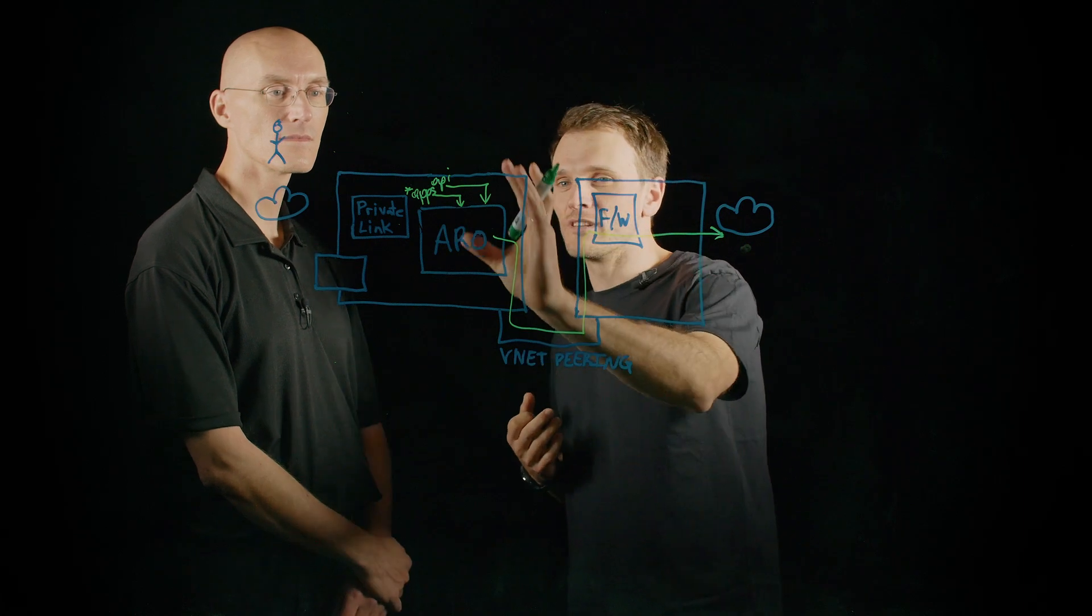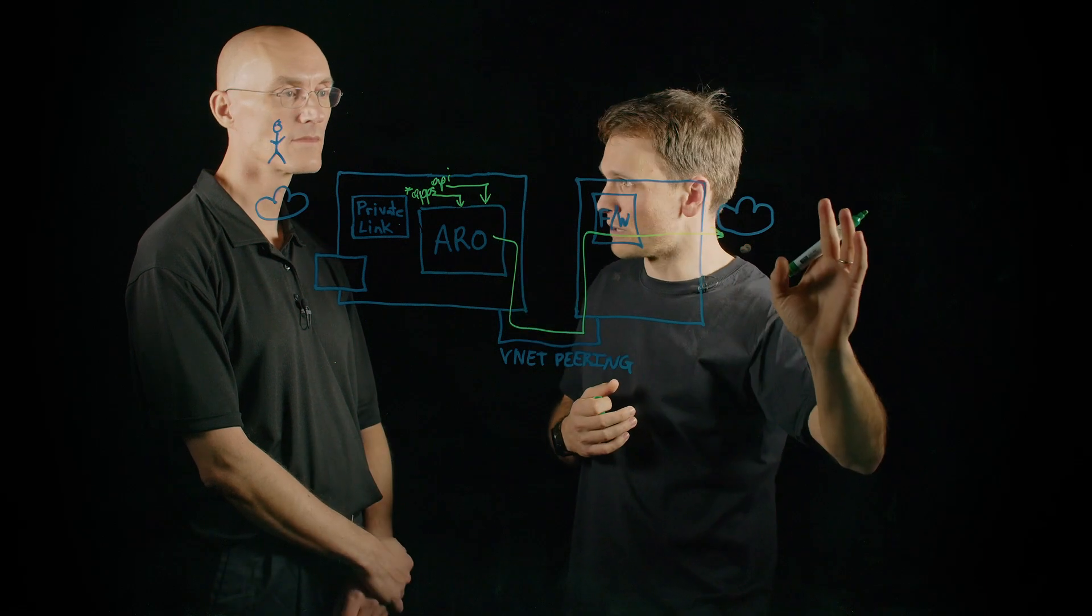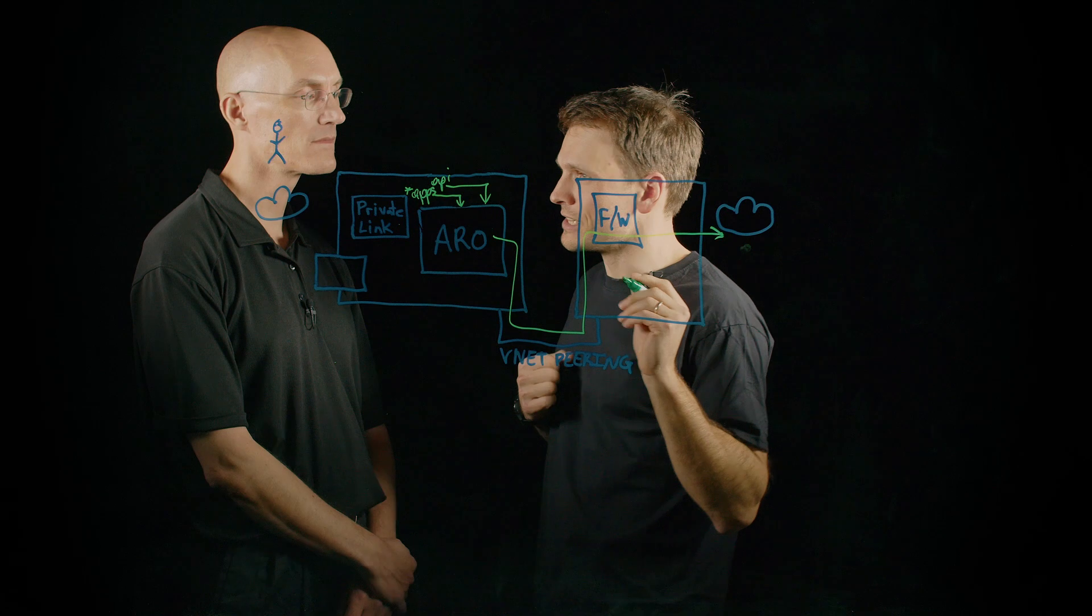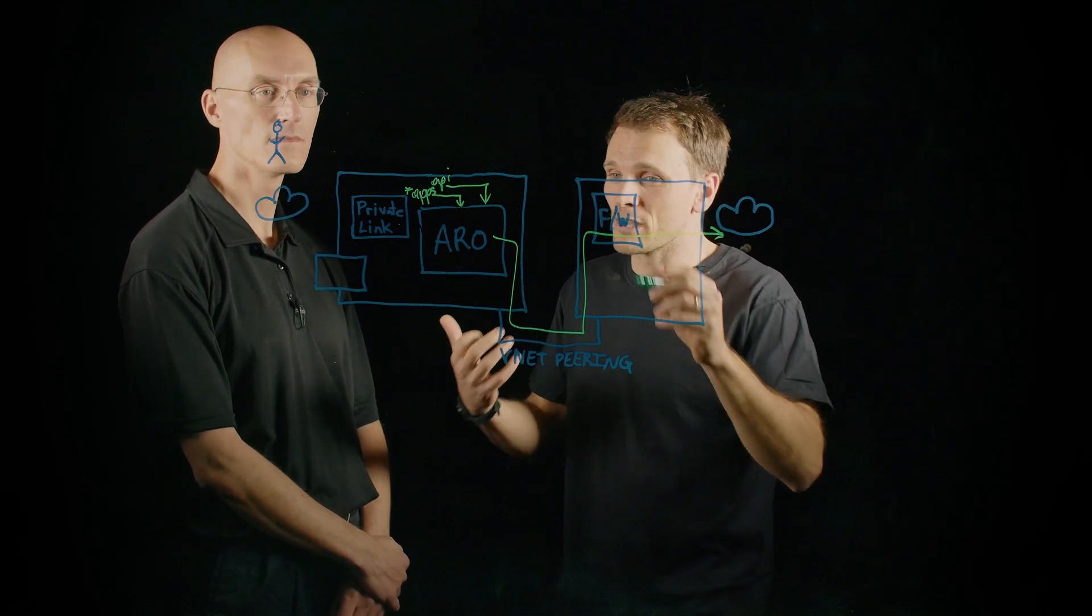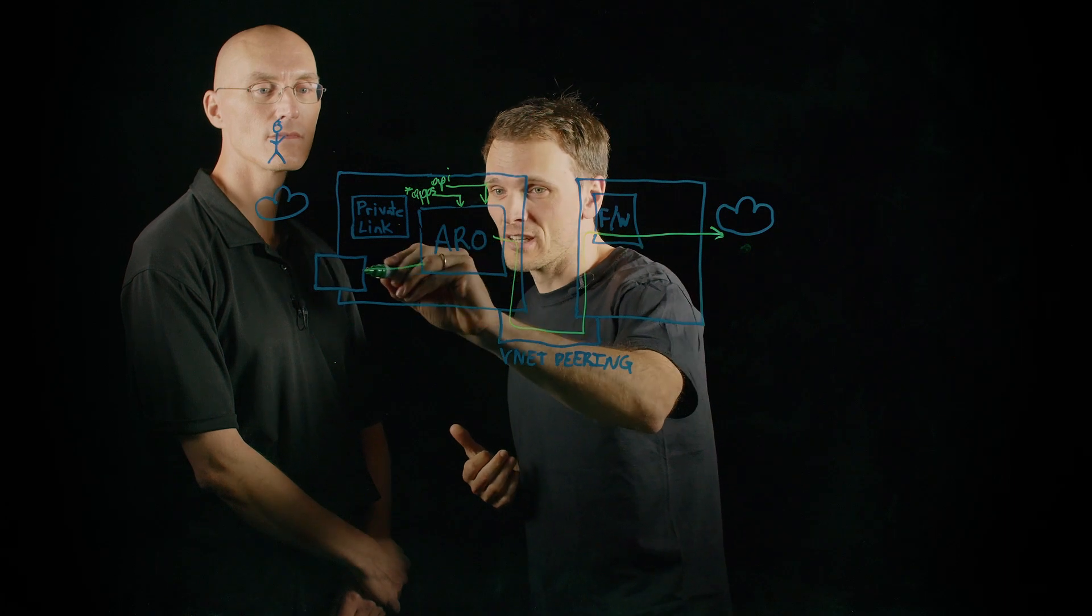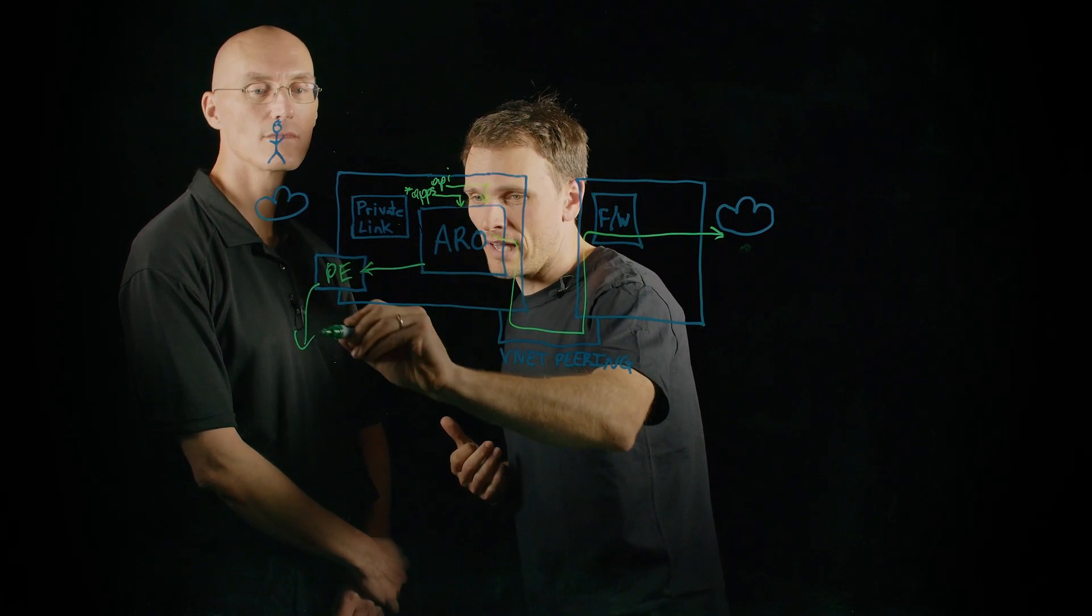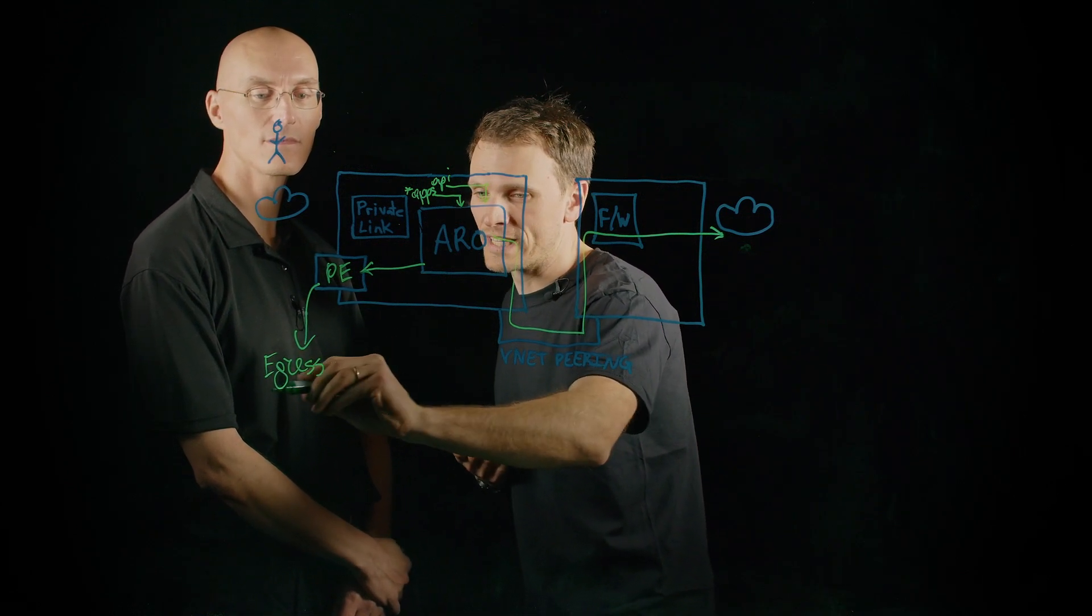Another important feature that is there for ARO is a so-called egress lockdown. If we want the entire cluster to be isolated from internet, so not having the outbound internet connection at all, then ARO still needs access to management endpoints in Azure. To make sure that is functioning, we add this private endpoint. And essentially that is the egress lockdown.